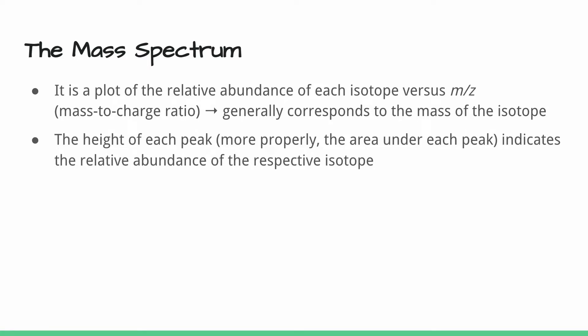We can then take this graph and take the height of each peak, or more properly the area under each peak, and that's going to tell us the relative abundance of each of the respective isotopes.